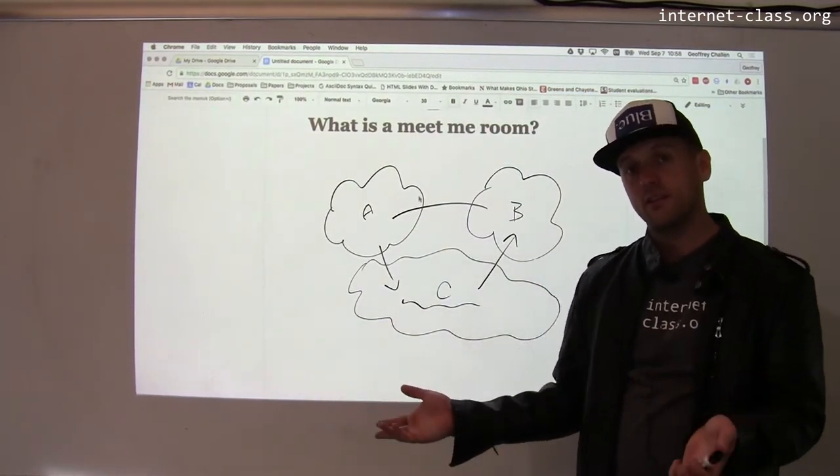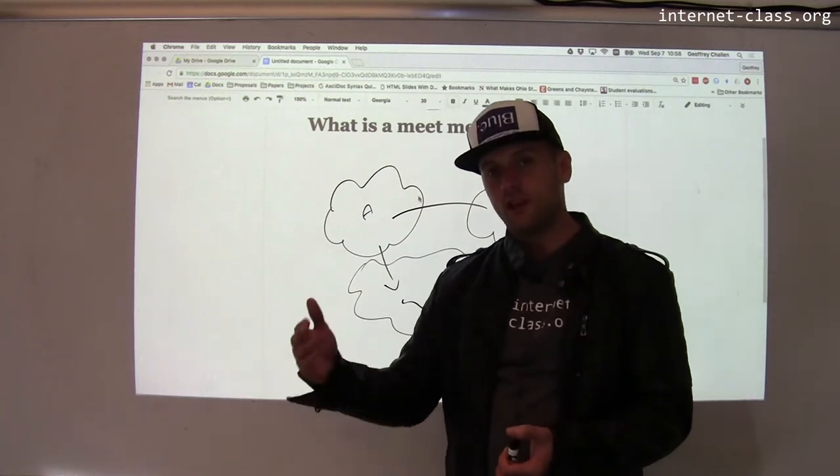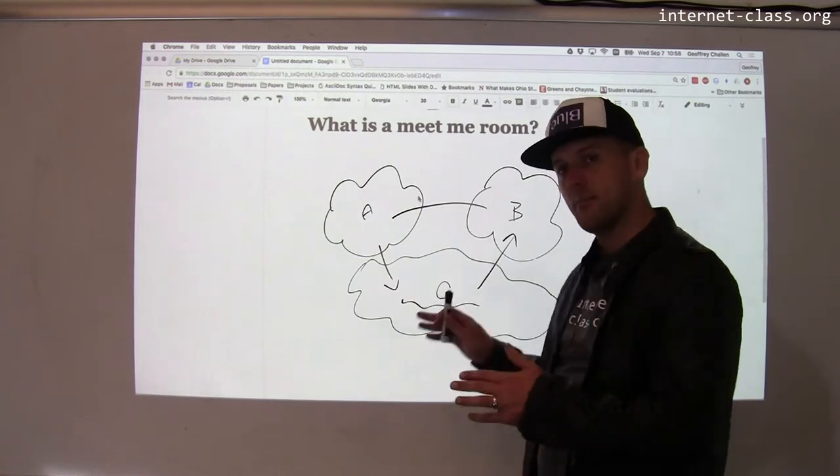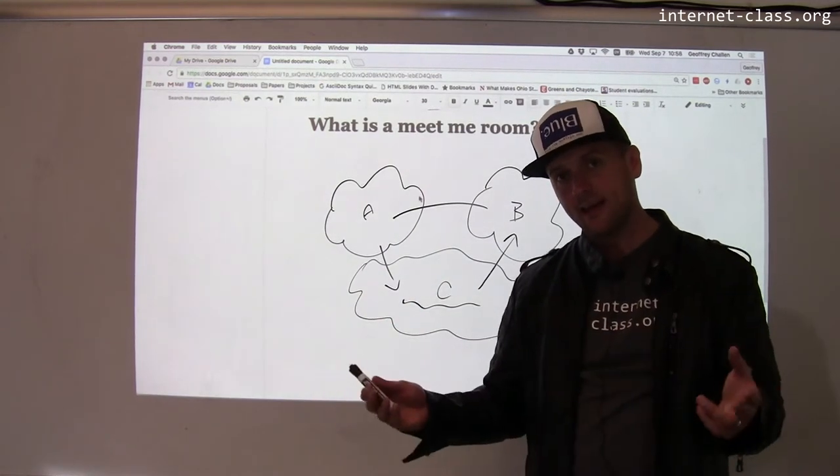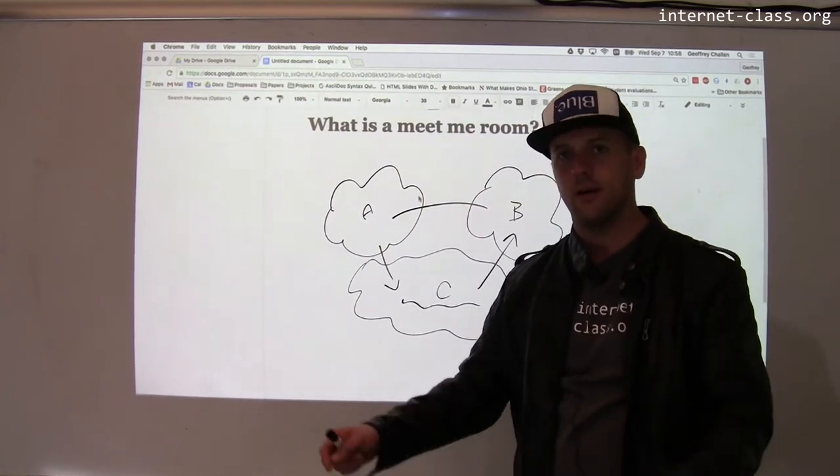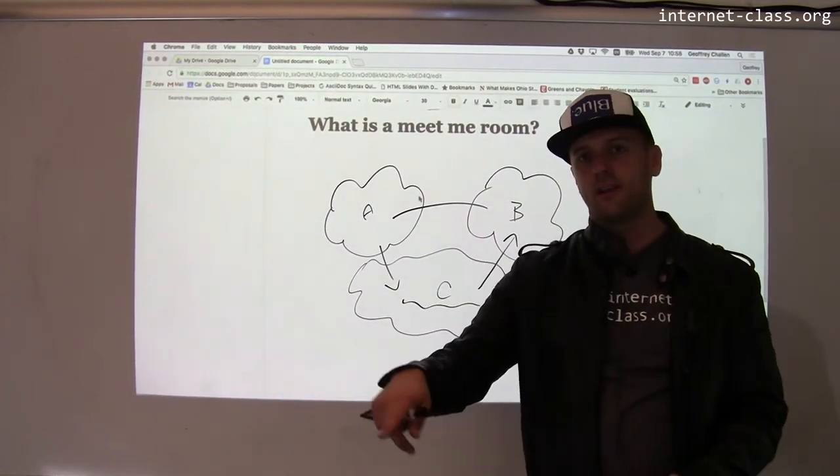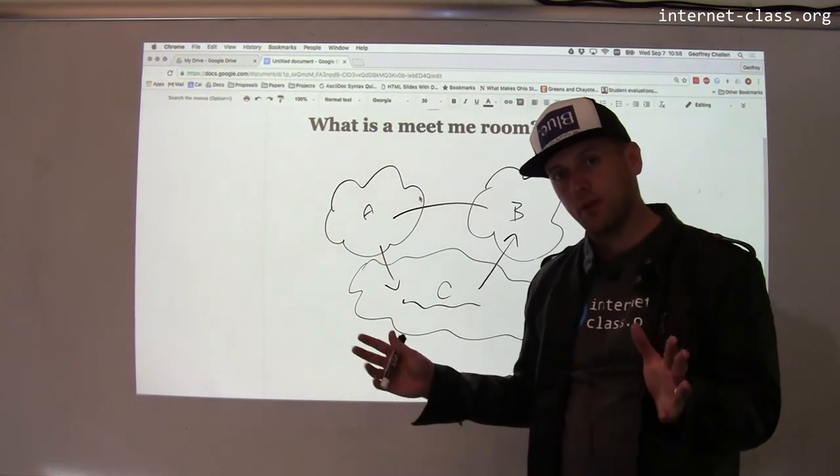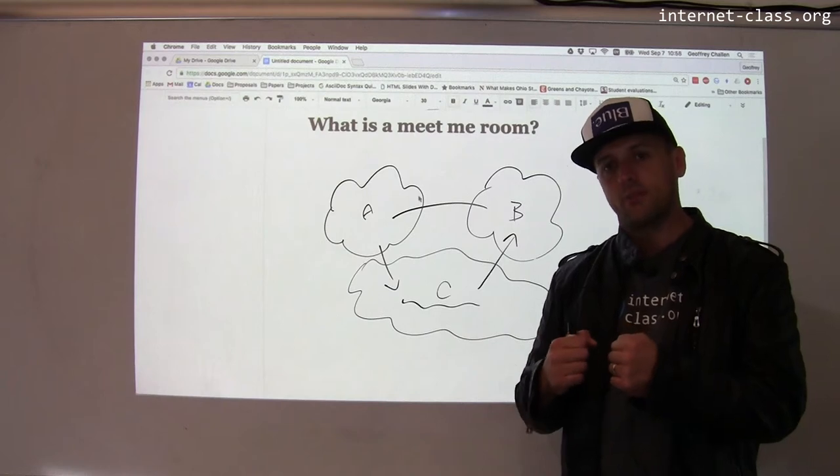So for example, in New York City, you might have a bunch of universities. Each university operates its own network, its own autonomous system. Rather than hoping that my internet service provider does the right thing and doesn't route traffic between New York University and Columbia all the way out across the eastern seaboard, those universities might run cables just directly into a meet-me room where they can hook up together.